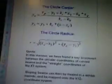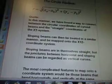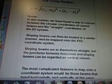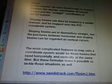Those are the math equations that you'll need to use to create this. In this manner we have found a way to convert between the circular coordinates of curved beams and the straight coordinates of the XY system. Sloping beams can then be treated in a similar manner and be mapped out onto the XYZ coordinate system.